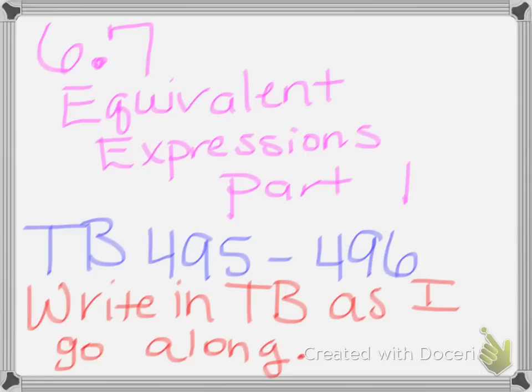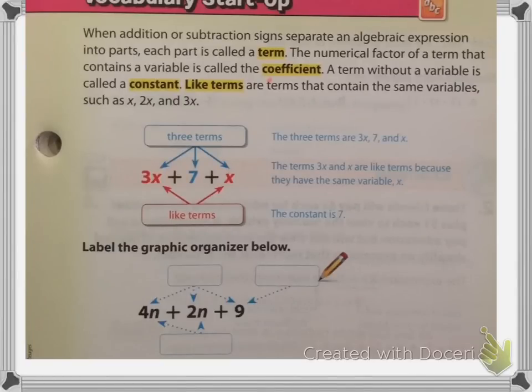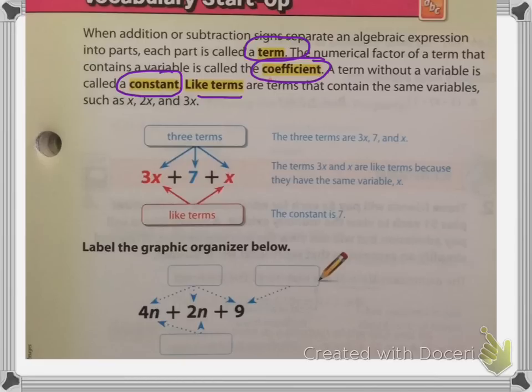That's what I'm checking for when I check your homework the next day. All right, let's get started. So here on textbook page 495, you see the vocabulary startup. It says when addition or subtraction signs separate an algebraic expression into parts, each part is called a term. The numerical factor of a term that contains a variable is called a coefficient. And a term without a variable is called a constant. Like terms are terms that contain the same variable, such as x, 2x, and 3x.